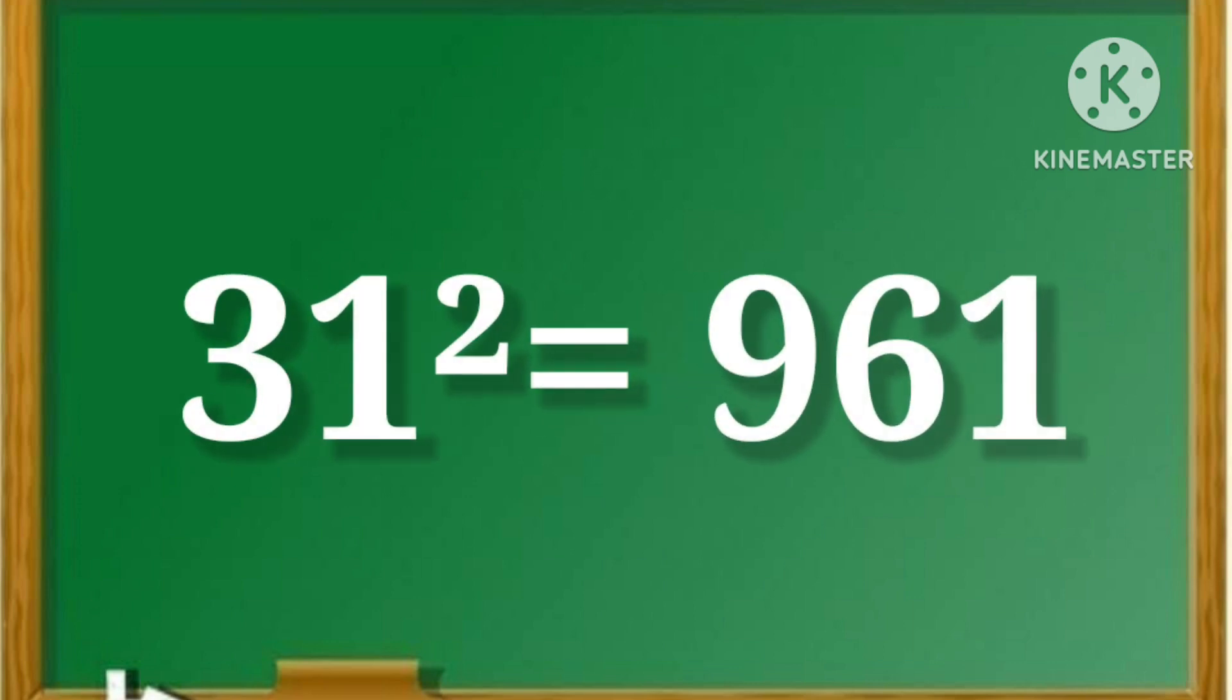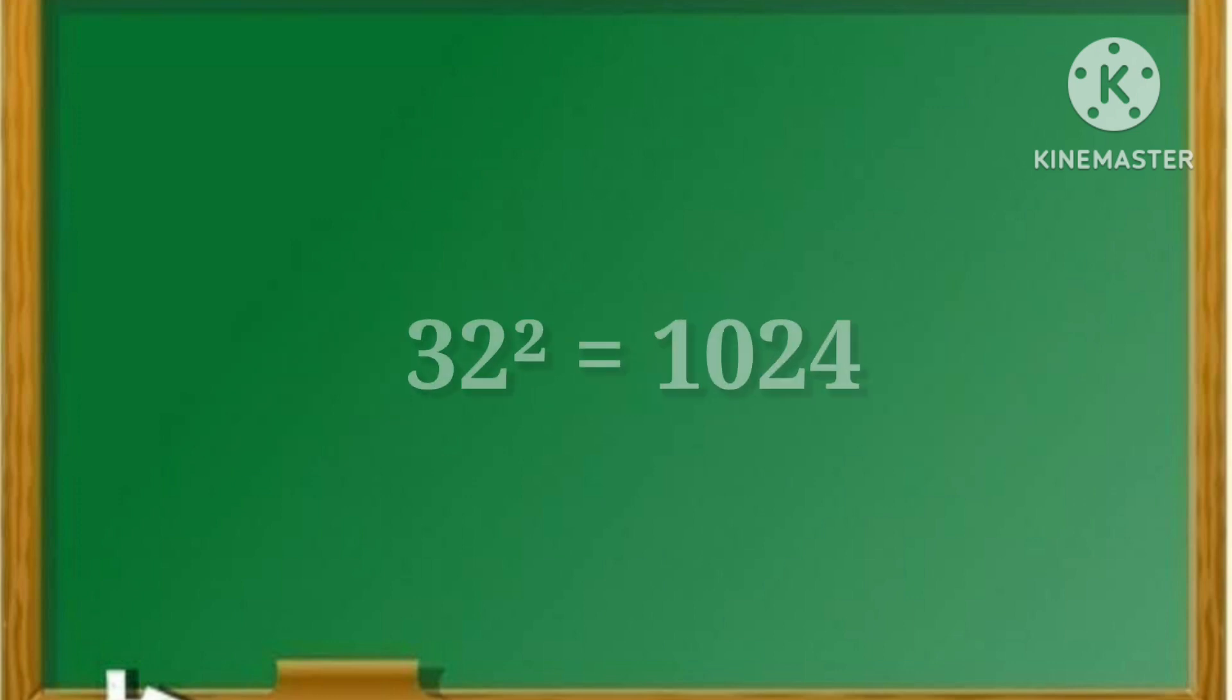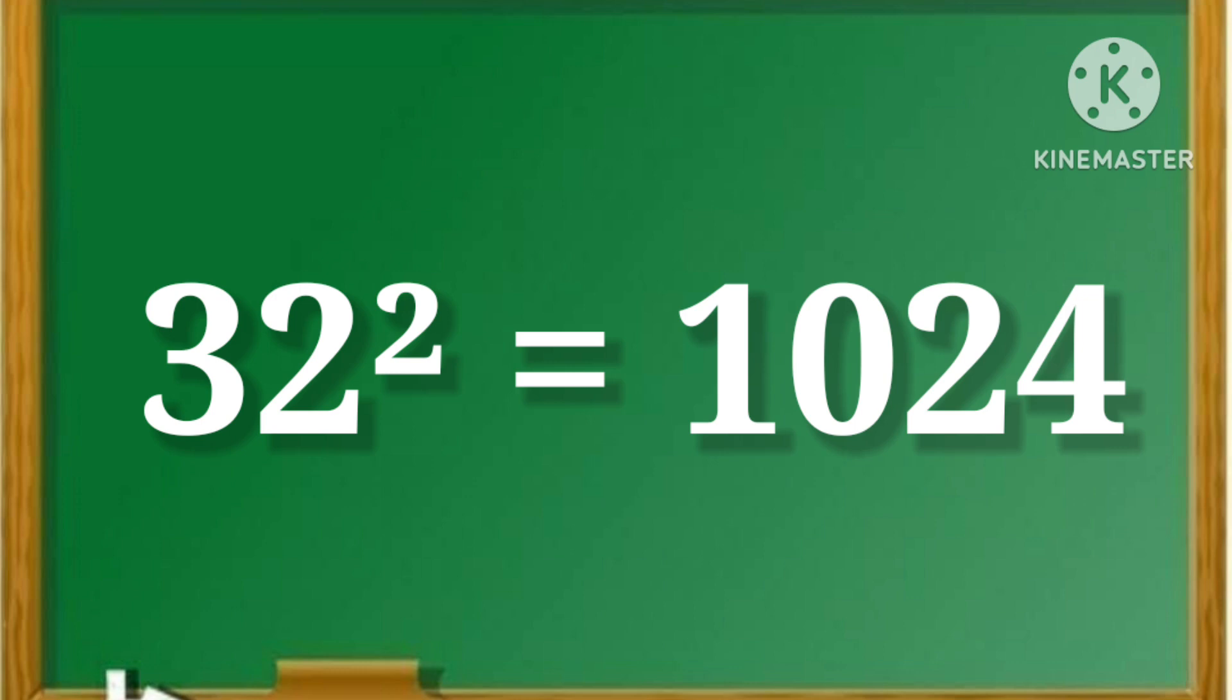31 square is equal to 961. 32 square is equal to 1024.